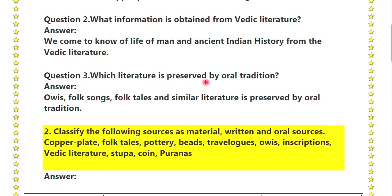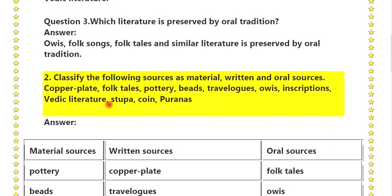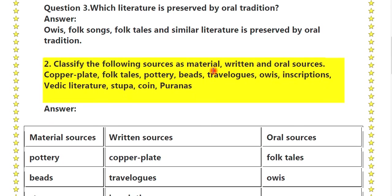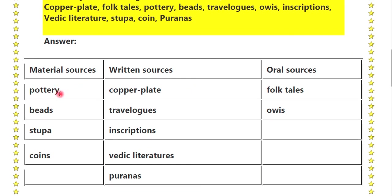Question No. 3: Which literature is preserved by oral tradition? Question No. 2 classification: Story, beats, stupa and coins are written sources. Copper plate, travelogue, inscriptions, Vedic literatures and Puranas are also written sources. Oral sources include folktales and Ovis.